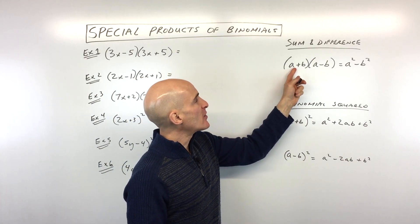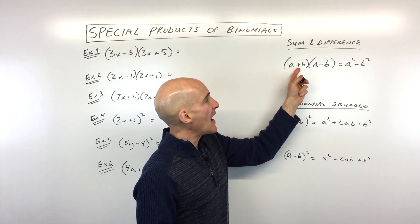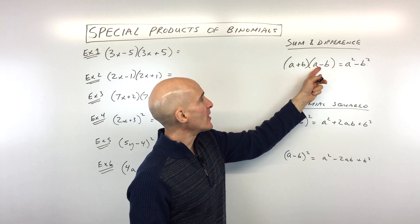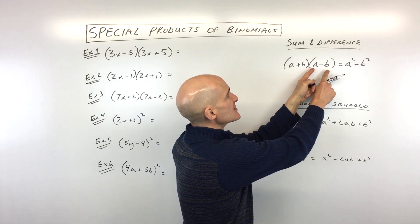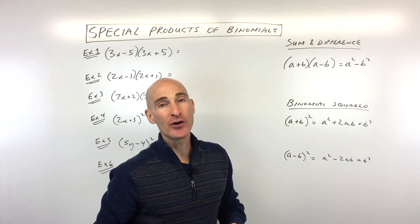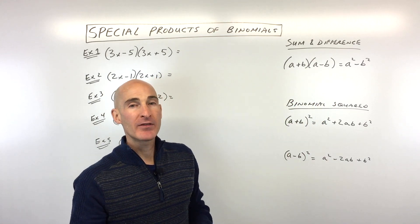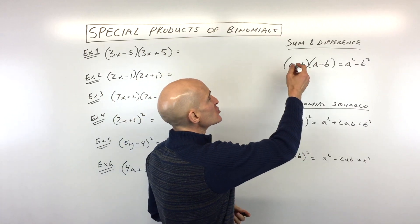So a sum and difference pattern means that you have one that's added and one that's subtracted. Notice that the a and the b in this first binomial are the same as the a and the b in the second binomial. Now, we know the FOIL method or the distributive property. Let me just show you that real quick.